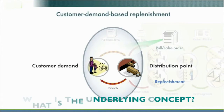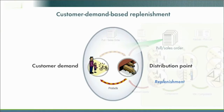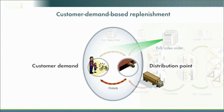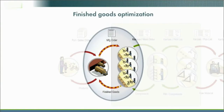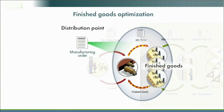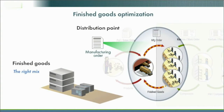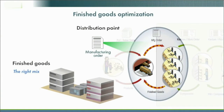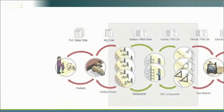Replenishment is guided by a continuous stream of real-time consumption data, not forecasts. The right mix of finished goods at distribution points is based on usage, not random days on hand — inventories optimized.